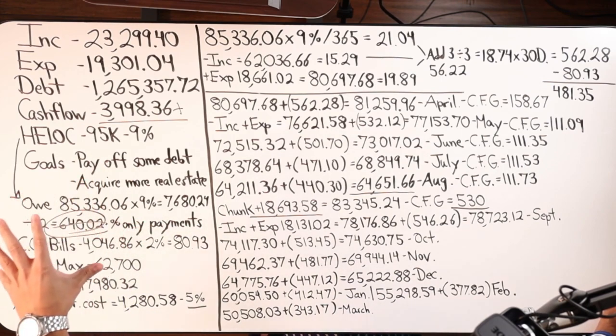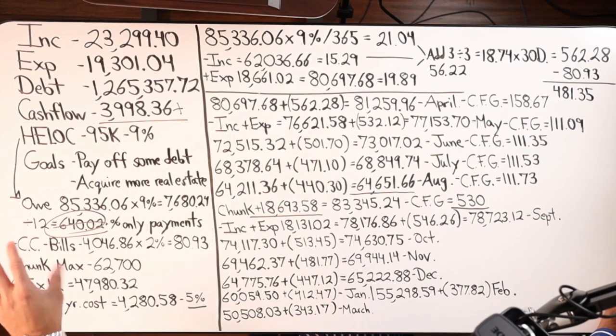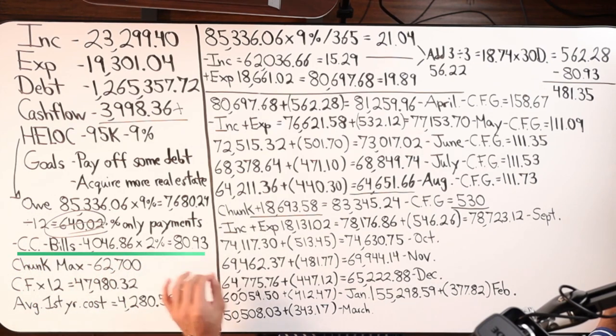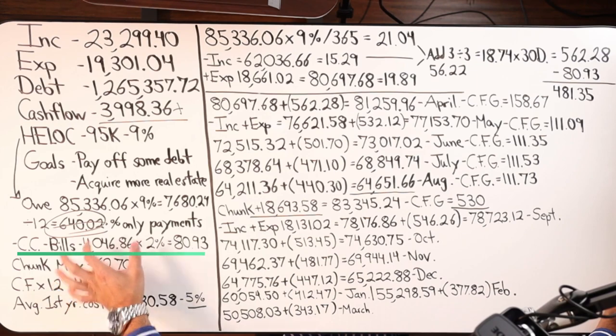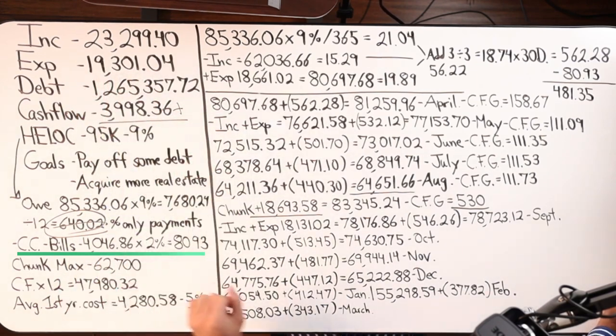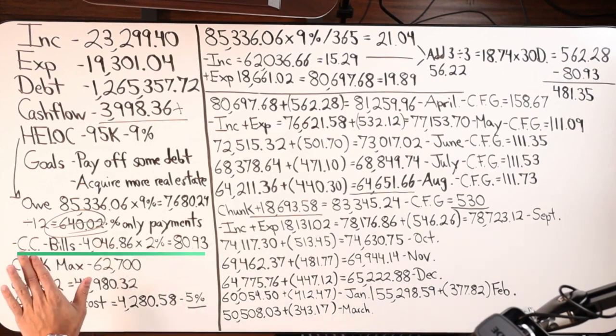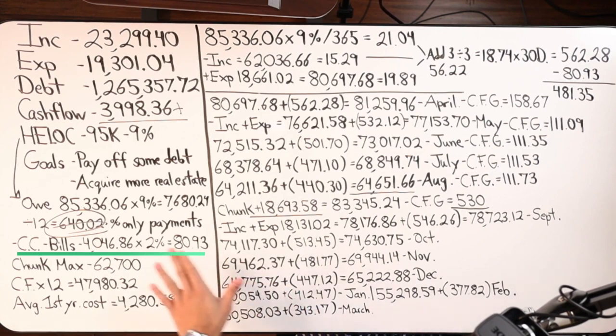Another component of velocity banking here is we're using a credit card to run bills and earn about 2% cashback rewards. We've identified what those bills are within this number of the 19 grand. We have $4,046.86 per month that we can run through a credit card, pay it off each and every month and get $80 back, $80.93 at 2%.